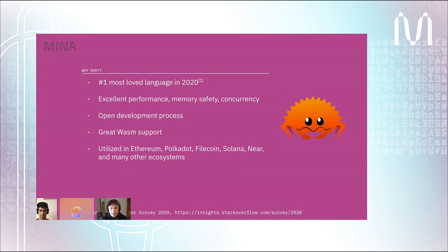Now let's answer some of the questions that you might have. Why Rust? Rust is the most loved language in 2020, according to Stack Overflow's developer survey. It's well known for its excellent performance, memory safety, and concurrency. It has a strong community-driven open development process which is very active. It has some of the best language support and tooling for WASM, and it's already being used by a multitude of protocols for their primary or alternative implementations.